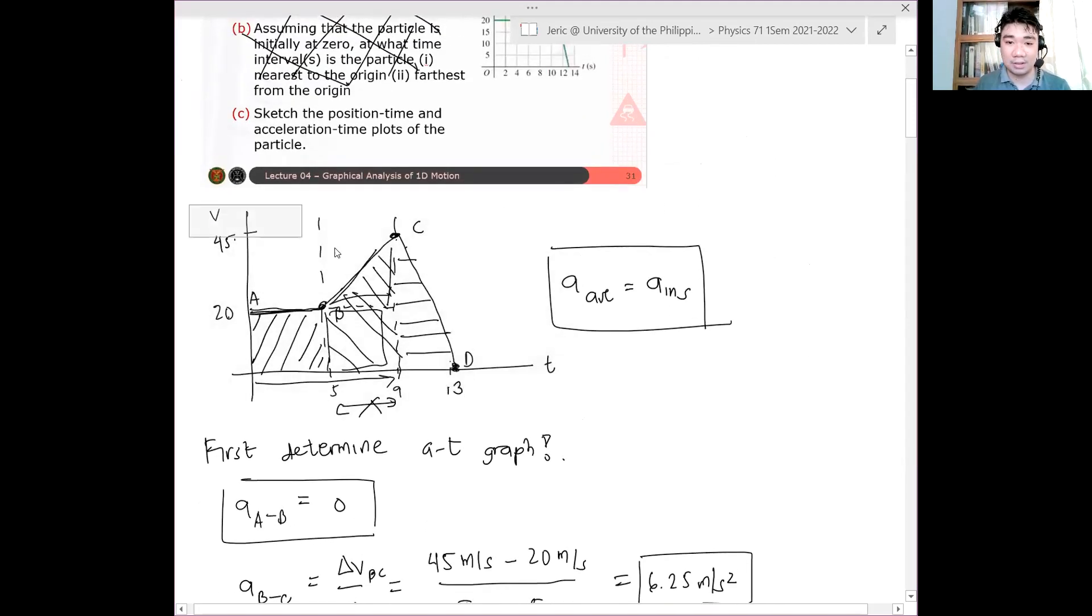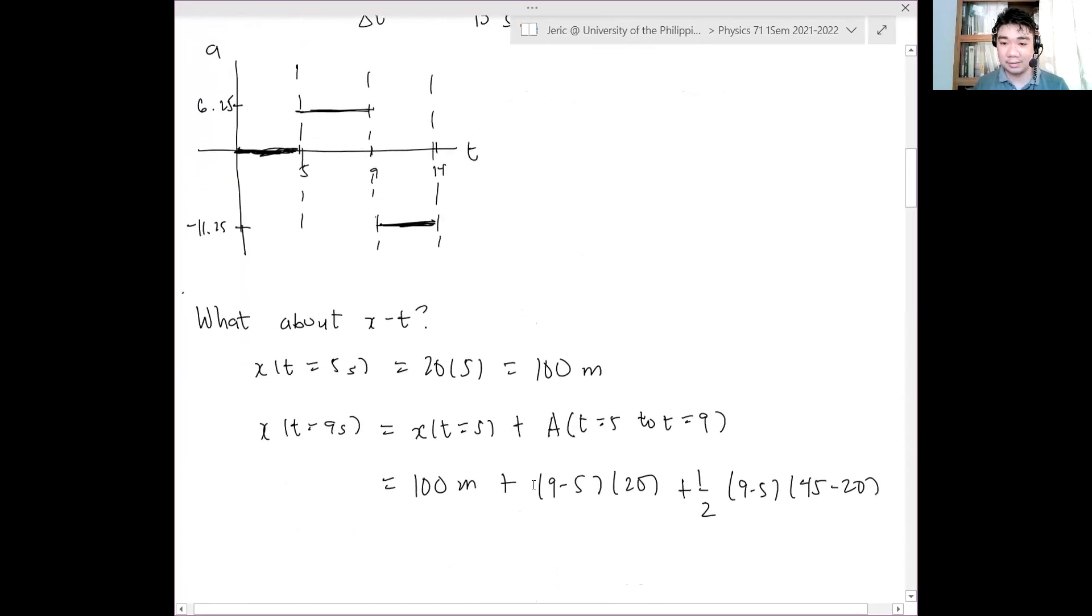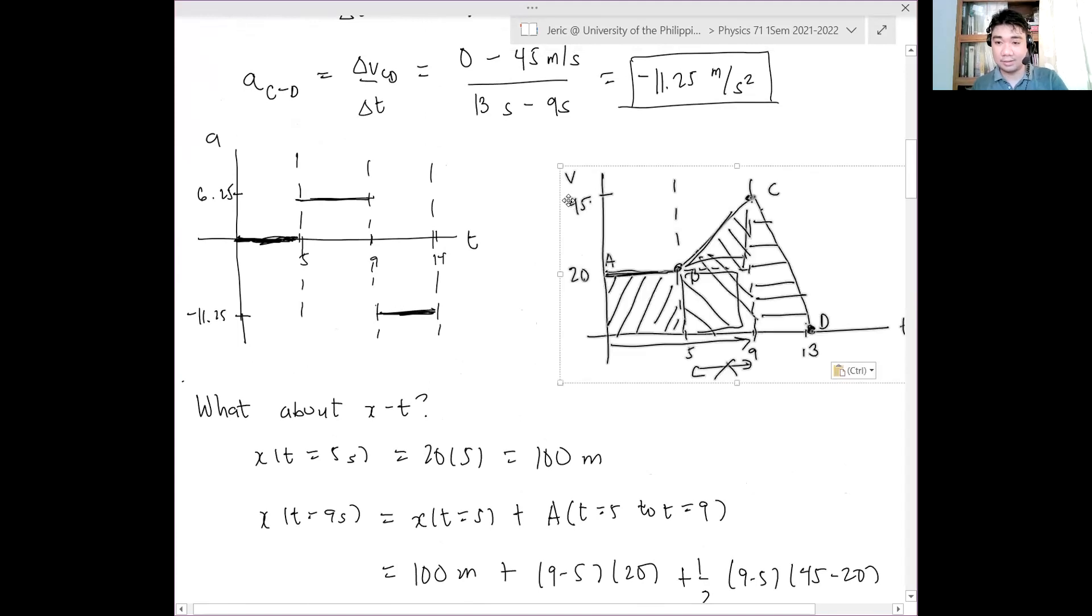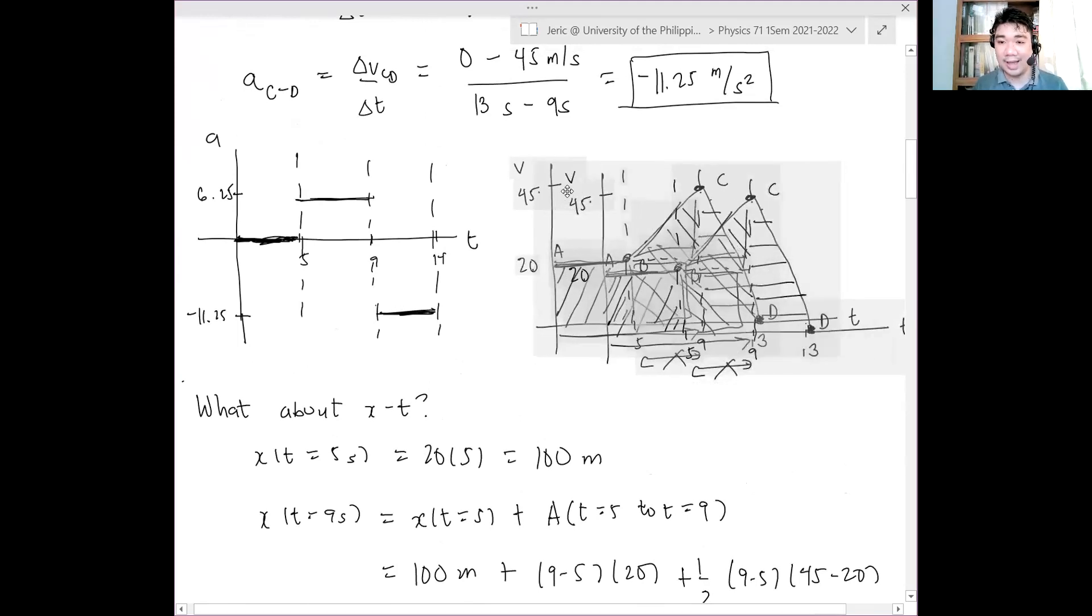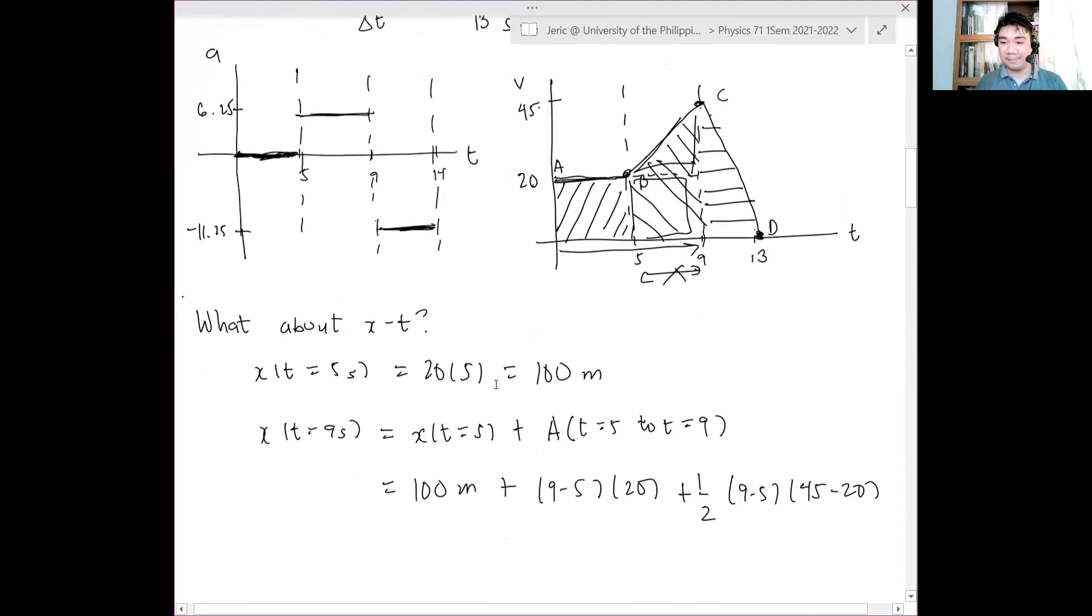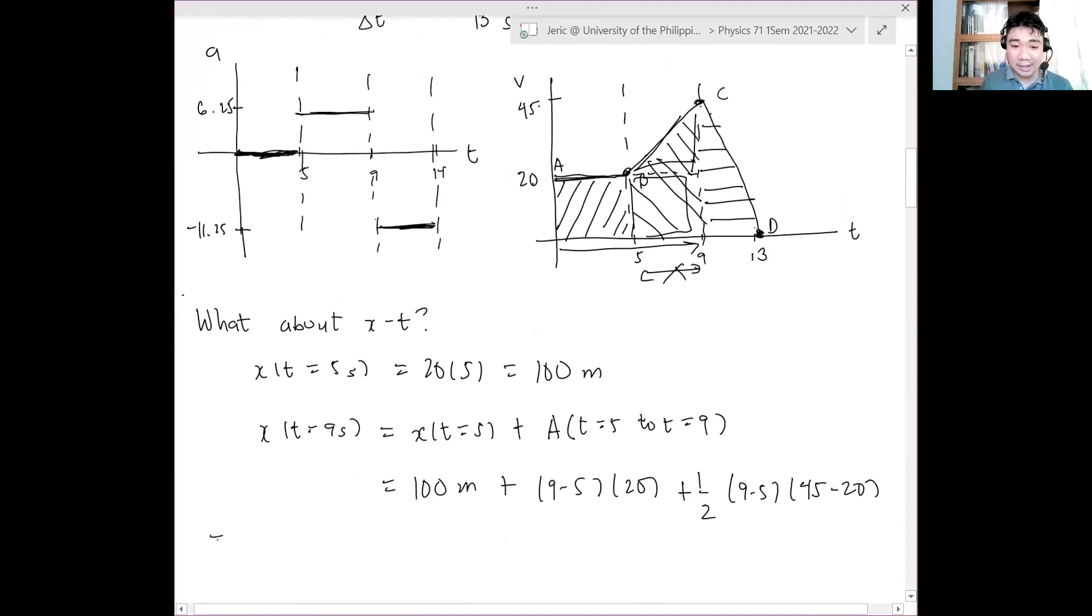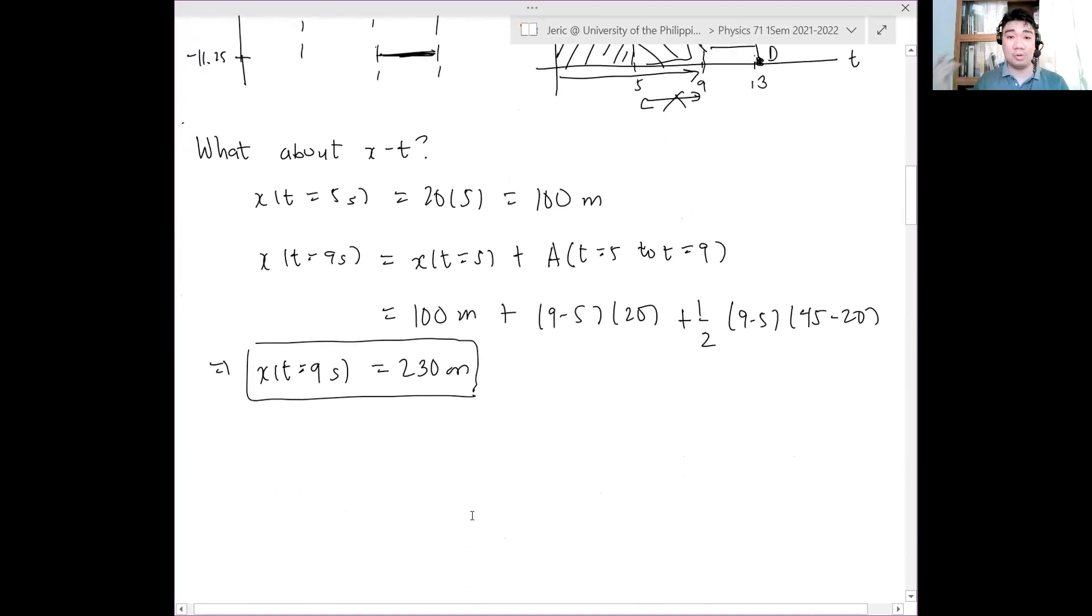Hence, this becomes 100 meters plus, you can divide this into a square and a triangle - 9 minus 5 times 20 plus one half times 9 minus 5 times 45 minus 20. When we do that, x at t equals 9 seconds is just 230 meters. This explains why I'm finding these transition points, because it makes it easy to find the nature of the curve after we determine the position values at transition points.